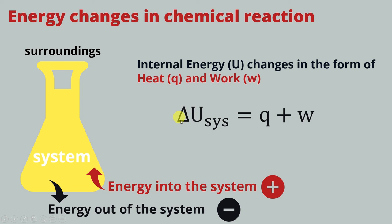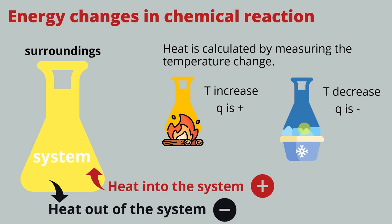Delta U of the system equals Q plus W. The system, Q, and W each carry a positive or negative sign indicating the direction of change. Looking at Q or heat first: heat into the system is positive, and heat out of the system is negative.